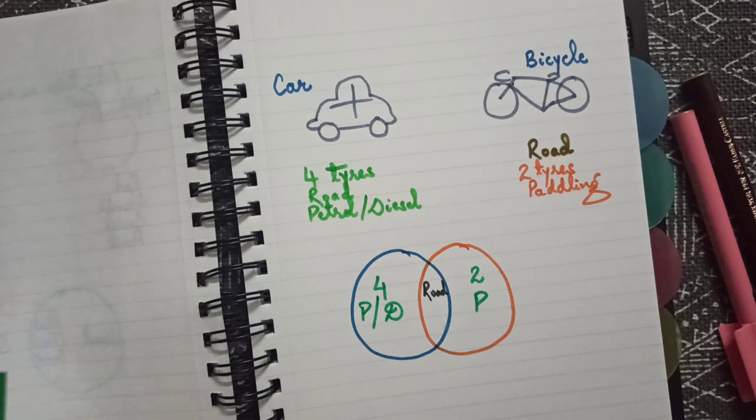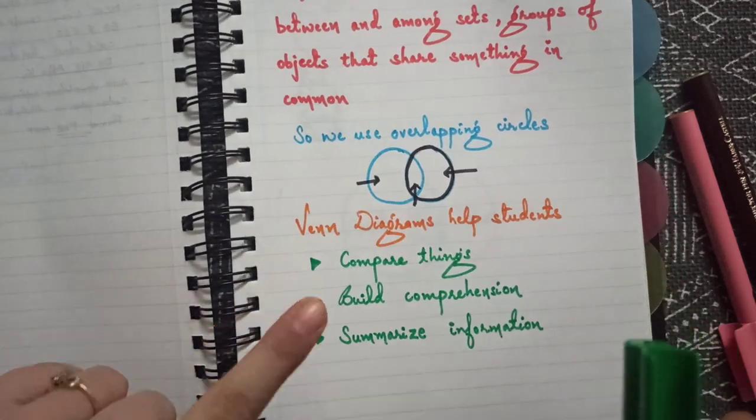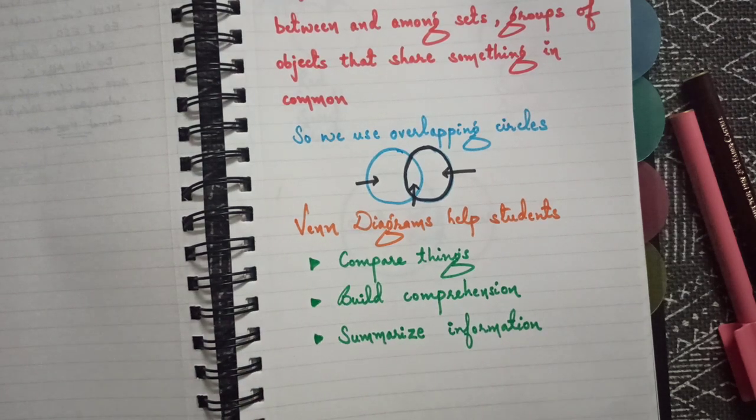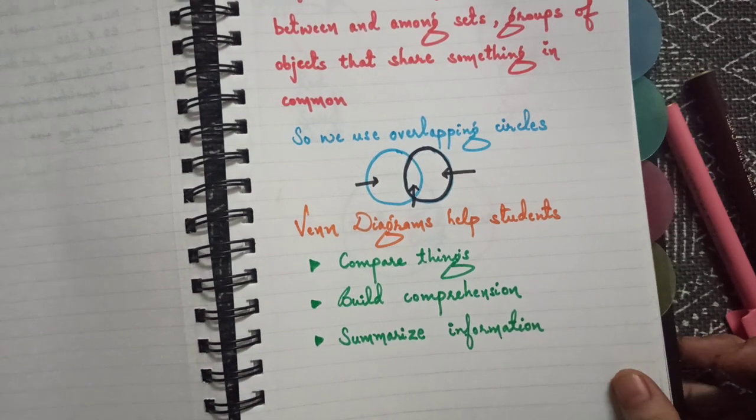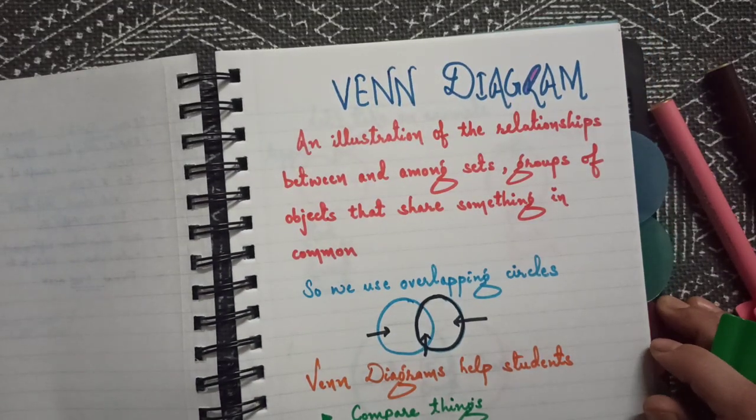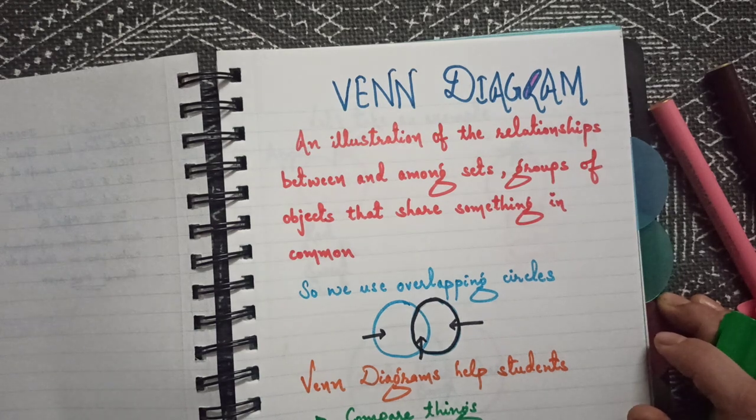Venn diagram is about comparing things, building comprehension, and summarizing information. I hope you liked today's topic. Please keep on liking, sharing, and subscribing. Happy learning!